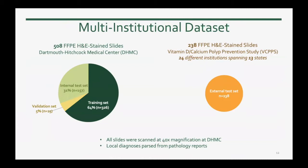This is a multi-institutional project, so we had access to slides from both internal and external data sources. Our internal data source was Dartmouth-Hitchcock Medical Center, from which we had access to more than 500 FFPE H&E slides. We partitioned these slides into training sets, validation sets for hyperparameter tuning, and internal test sets. Our external test dataset includes 238 FFPE H&E slides from the Vitamin D Calcium Polyp Prevention Study, spanning 24 different institutions across 13 states — a very diverse dataset.